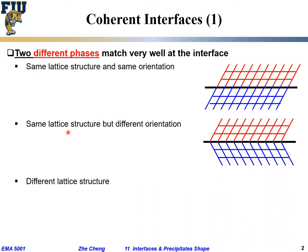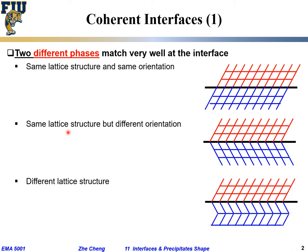Another situation would be completely different lattice structures — something idealized like this. On one side we have something like FCC with ABC ABC ABC close packing. On the other side, something like HCP with an AB AB stacking structure. But somehow at the transition or interface between these two phases, we still have pretty good matching. That's the coherent interface if we're thinking about the structure on both sides.